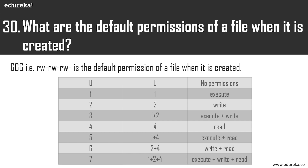In the permissions table, numbers 0 to 7 represent: 0 = no permissions, 1 = execute, 2 = write, 4 = read. The remaining values are sums: 6 = read and write (2+4), 7 = execute, read, and write (1+2+4). When typing a three-digit value, the first digit is the user permission, the second is the group permission, and the third is for everyone else.